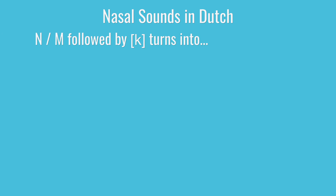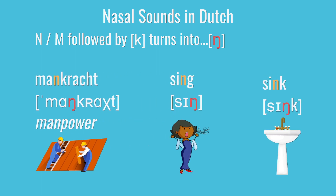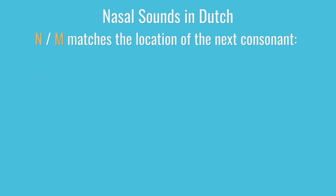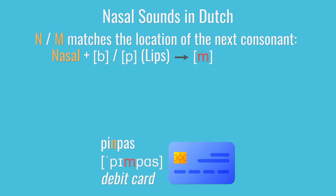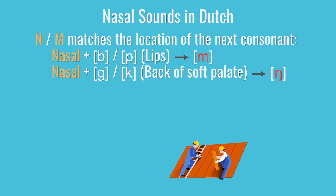Next up, what happens when you get a nasal consonant like an n or an m, followed by another consonant like a k? Say in a word like mankracht. It'd be hard to pronounce that n in the front of your mouth followed by a k at the back of your mouth. Mankracht. So instead, you'll make the n using the back of your tongue. Mankracht. It's the exact same thing that we do in English in words like sing or in sync. In Dutch, you'll see this phenomenon move that n all throughout your mouth, always matching the position of the consonant that comes afterwards.